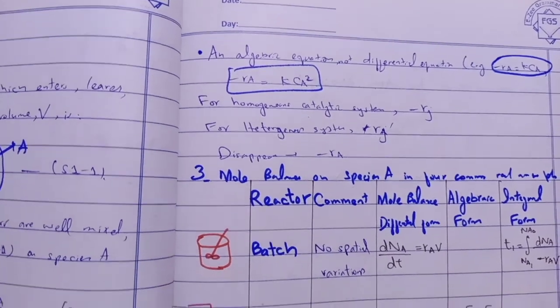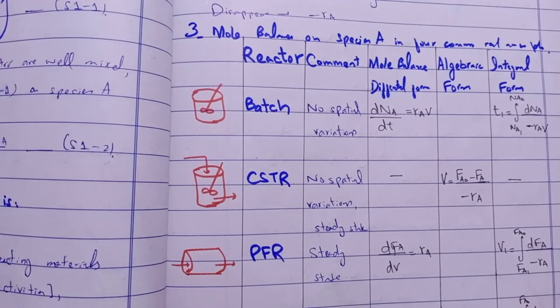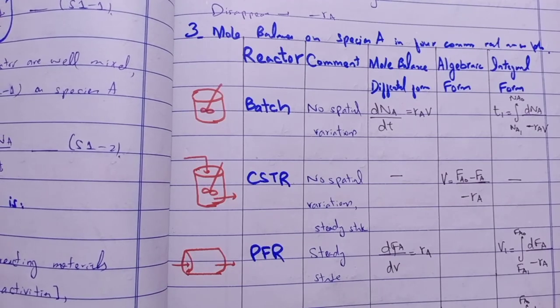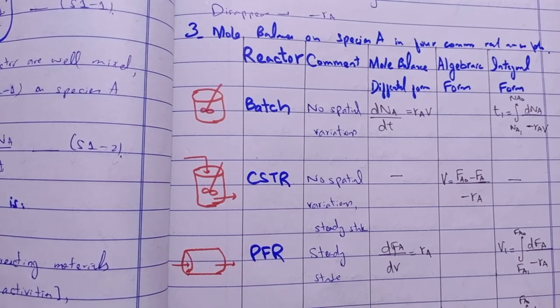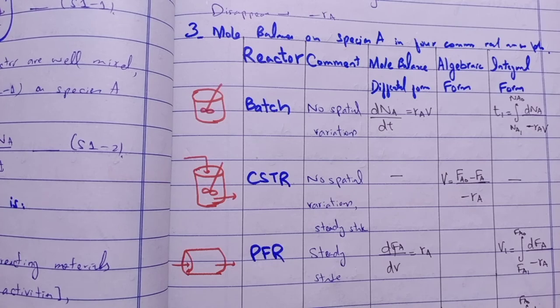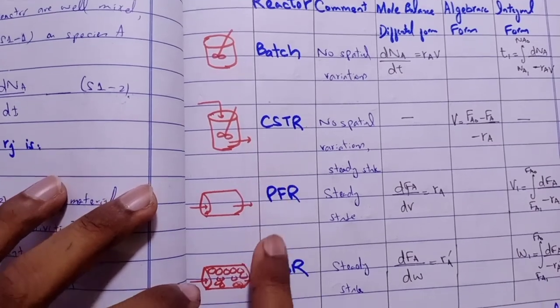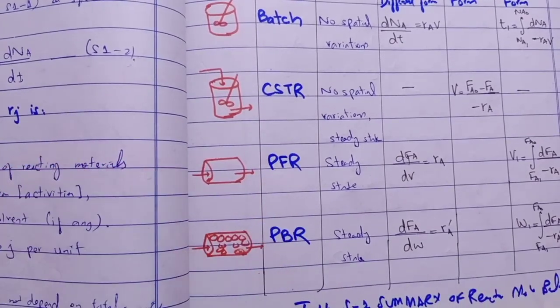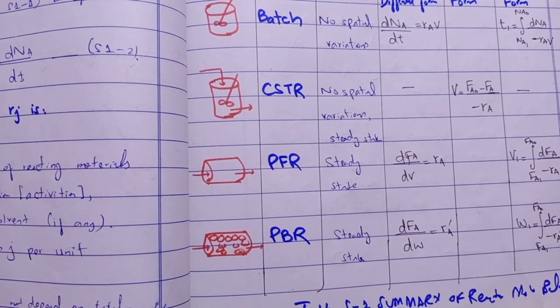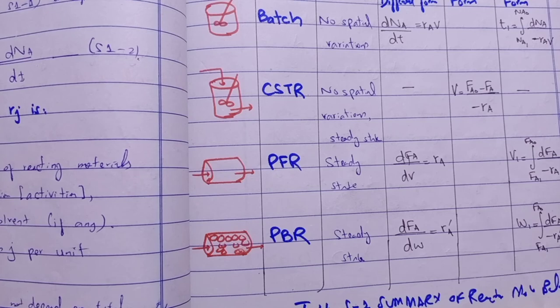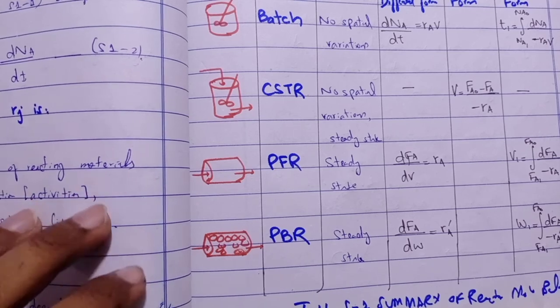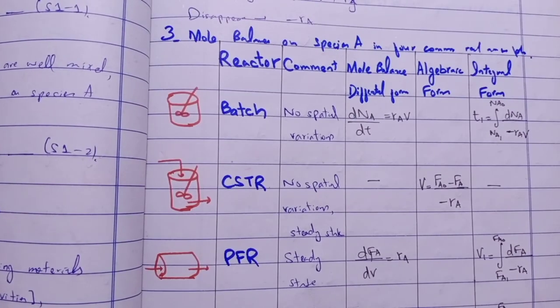The third point is very important. I also discussed in the previous lecture the batch reactor equations, design equation and CSTR design equation, and PFR and PBR. Please note down in your register and notes. Please make notes for better understanding.